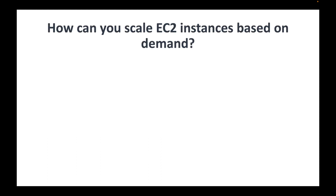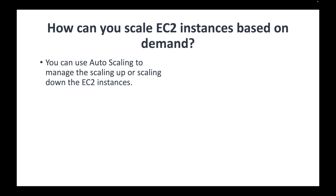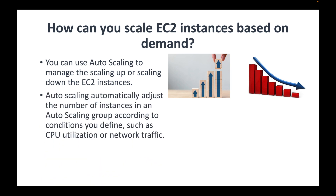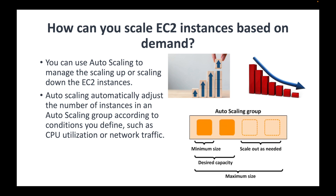The next question is: how can you scale your EC2 instances based on demand? For this you can use Auto Scaling Groups. This EC2 feature manages the scaling up and scaling down of your instances automatically. Auto Scaling Groups will automatically adjust the number of instances according to conditions you define — for example, based on CPU utilization or network traffic, you can automatically increase or decrease the number of instances.